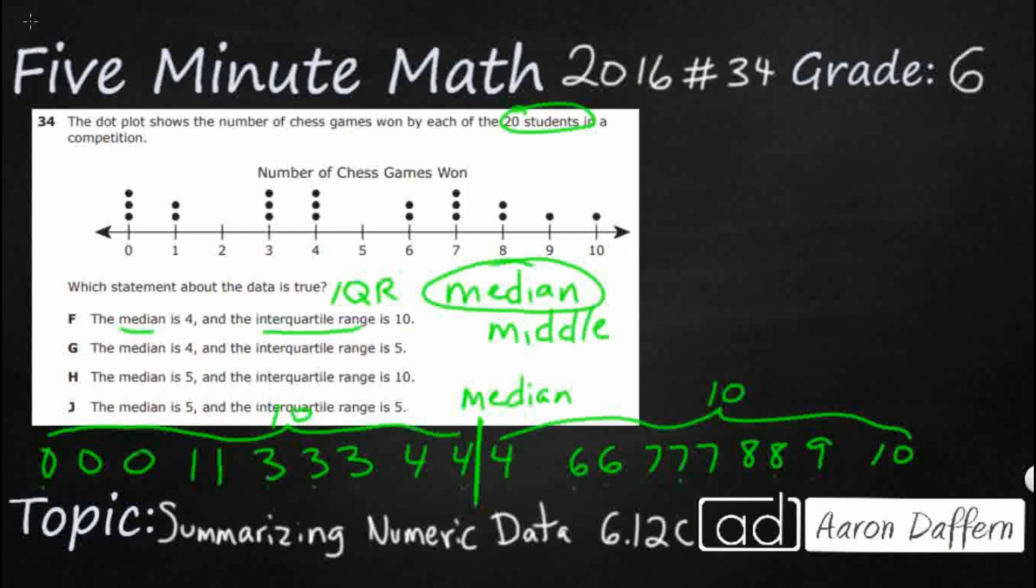Our median falls between two numbers because it's an even number data set. If it were an odd number, the median would be a single number, which is simpler. I need to find the midpoint between four and four. Between four and four, it's simply four.